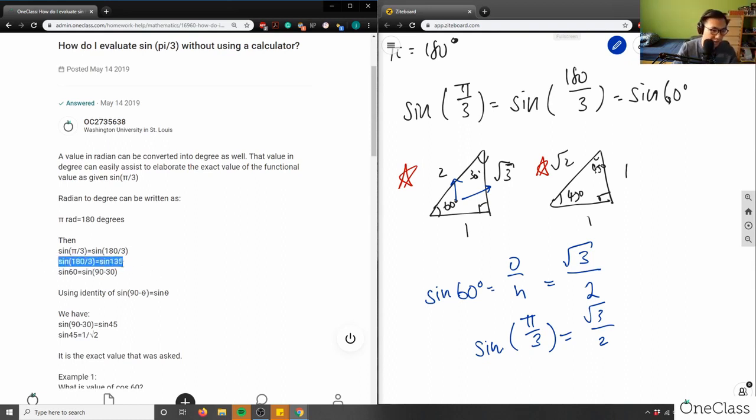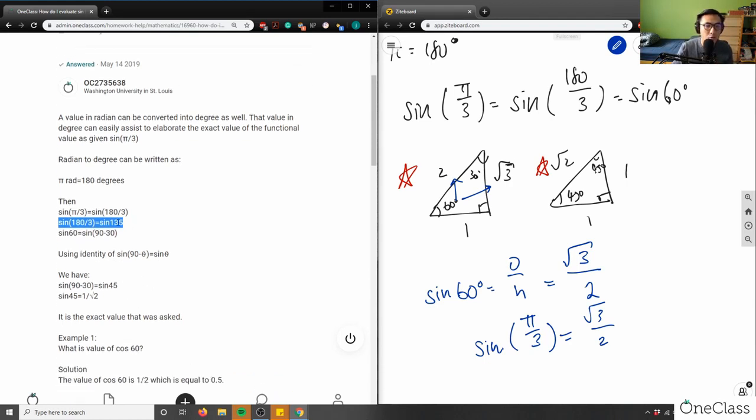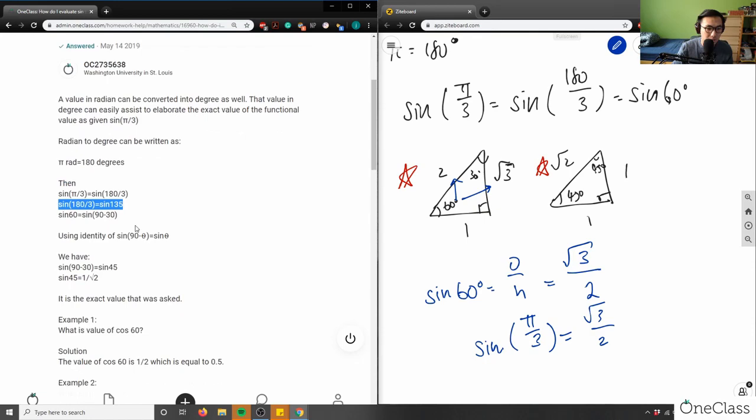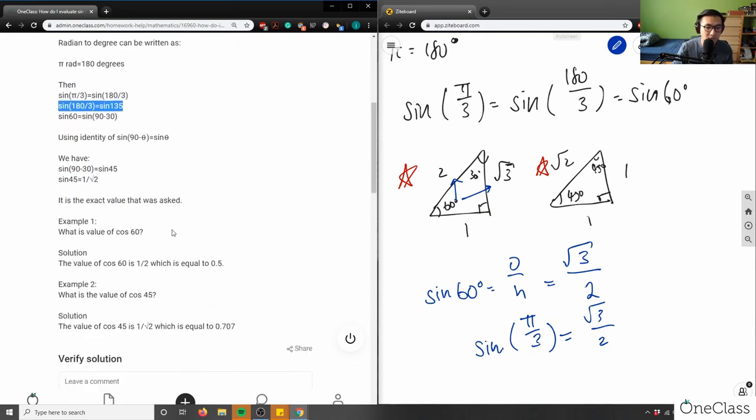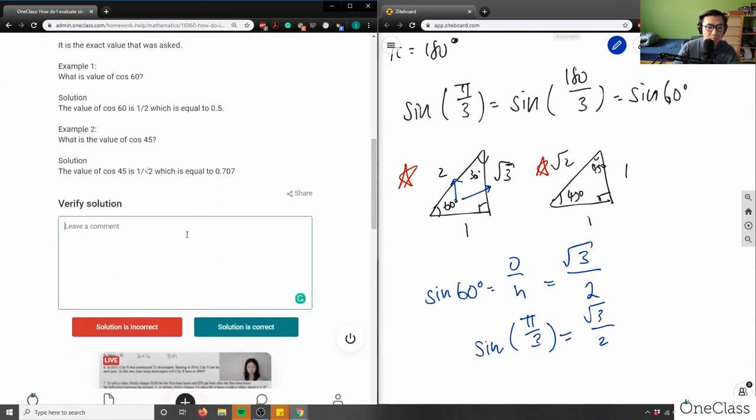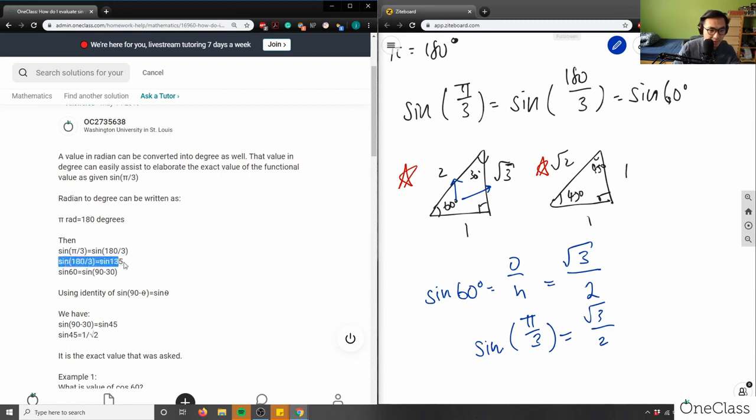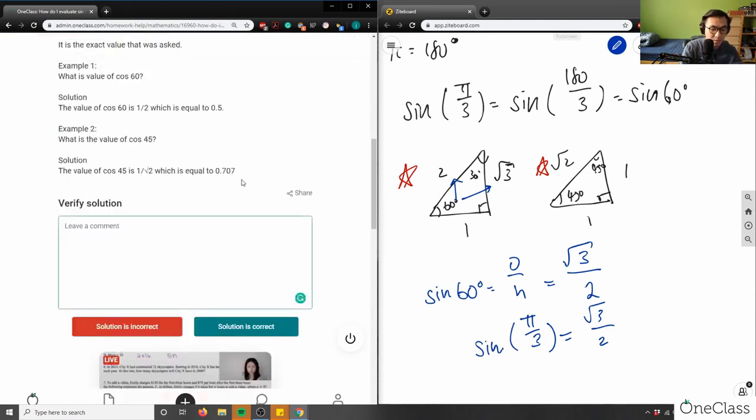So they actually did the question wrong here. This step is wrong. And then when you have sine 60 equals sine 90 minus 30, they're using an identity to help solve for sine 135 in this case. So this here is actually a wrong solution because of this step here. Sine 135 does not equal this, solution is incorrect because of this statement.